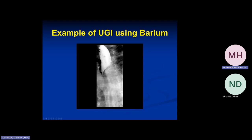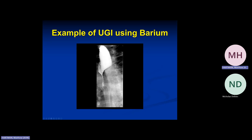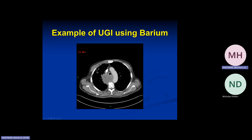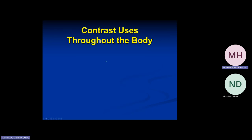Here's another example from an esophagram. We have dilation up here, then narrowing — remembering the RadPath patterns, narrowing with upstream dilation. What's the cause? Worried about a mass — it could be esophageal or an extrinsic mass. You get the CT truth machine, and this was a central lung cancer, small cell, causing local invasion around the esophagus.